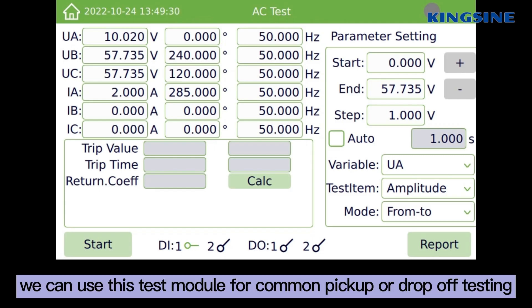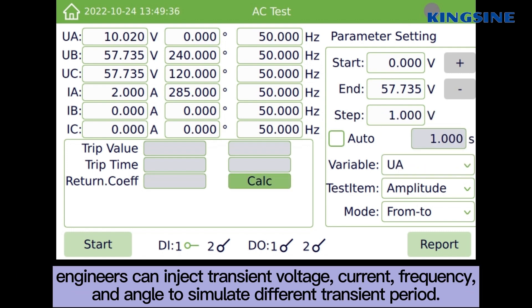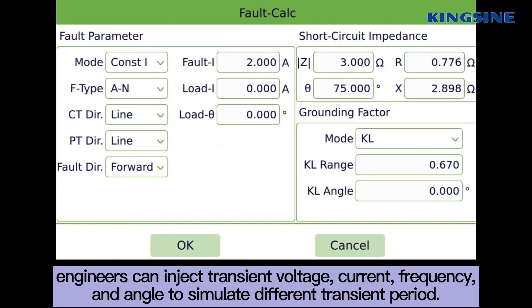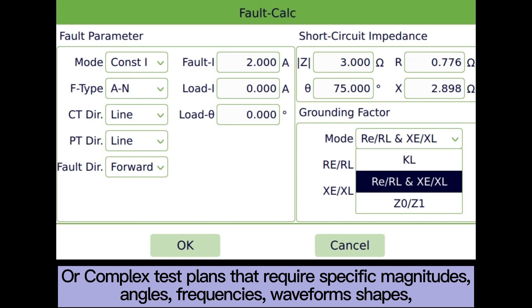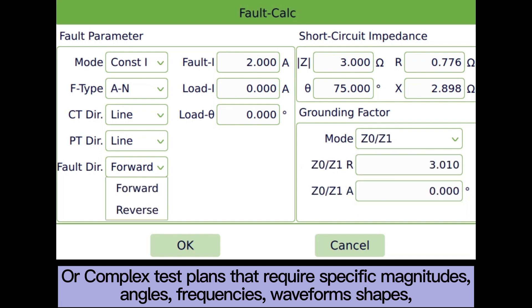For AC test, we can use this test module for common pick-up or drop-off testing. Engineers can inject trend voltage, current, frequency, and angle to simulate different trend period. All complex test plans that require specific magnitudes,